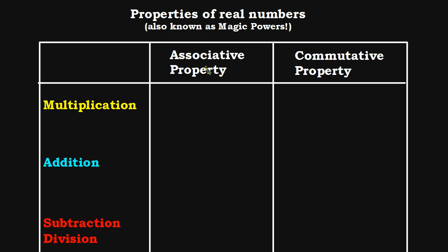Let's start with the associative and the commutative properties. These properties look a little different depending on whether we're talking about multiplication or addition. It turns out they don't apply to subtraction and division at all. There is no associative property for subtraction and division, and there is no commutative property for subtraction and division either.